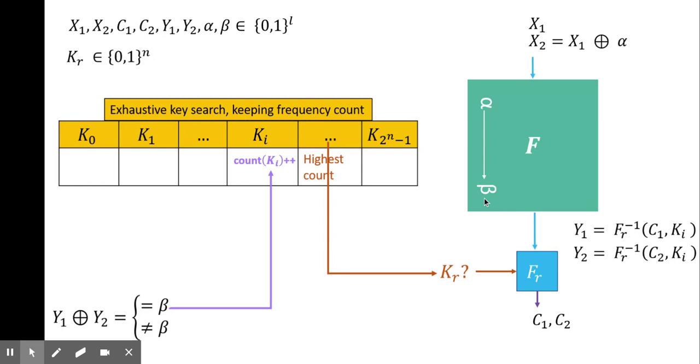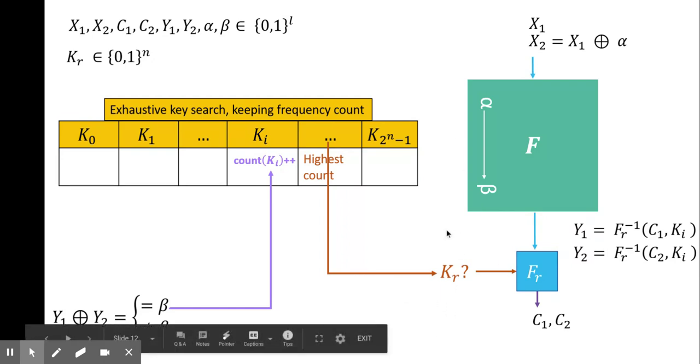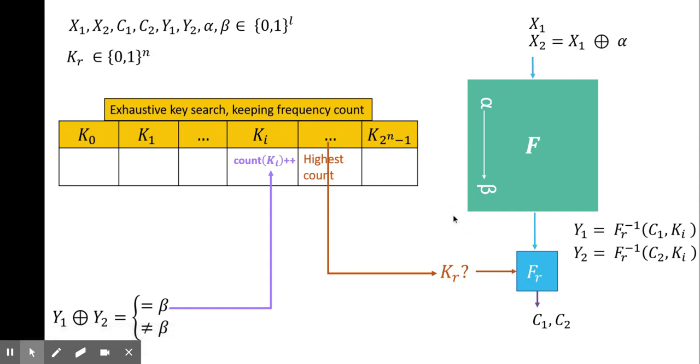Let us for now suppose that we have such a tail alpha beta. We will come to how to find such alpha beta later. For now, let's see how to find the key Kr for the round Fr when we have such alpha beta with high probability.